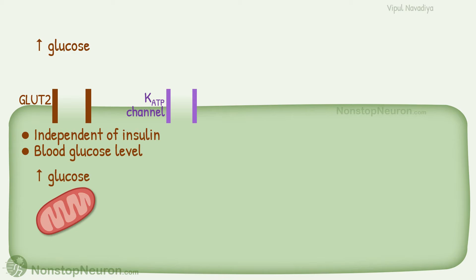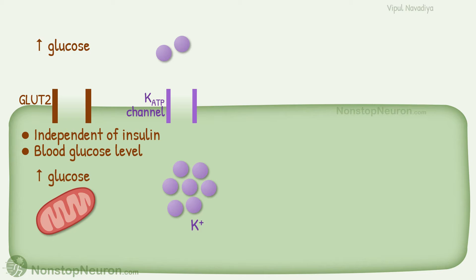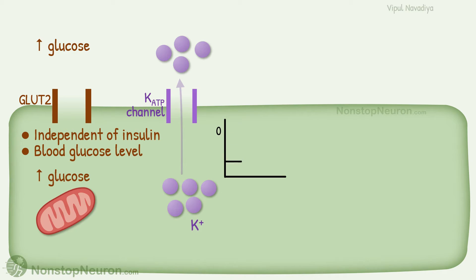Next, we have ATP-sensitive potassium channels. Constitutively, these channels are open. We know that for any cell, intracellular potassium concentration is higher than extracellular potassium concentration. Due to this concentration gradient, potassium continuously diffuses out through these channels. Loss of positively charged potassium makes the inside of the cell electronegative.